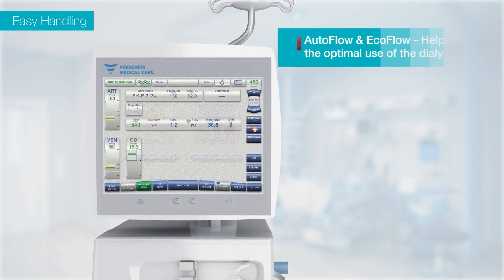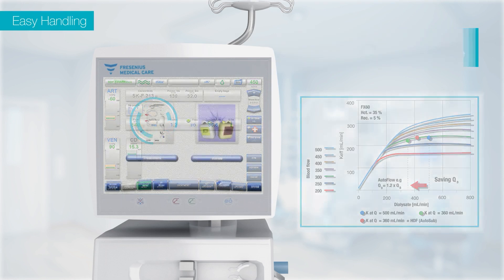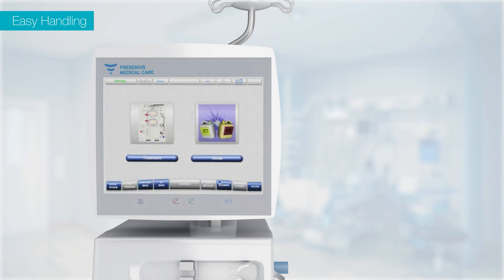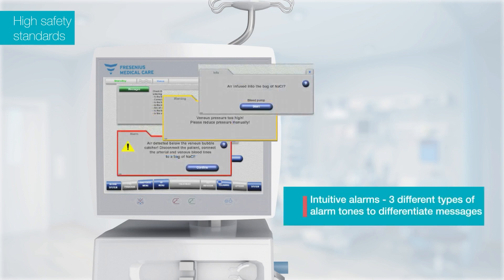The inbuilt autoflow eco-flow features help to regulate the flow rates according to the phase of HDF and thereby minimize consumption of dialysate. The intuitive alarms have three different types of alarm tones to differentiate messages, with available online help to solve the problem.